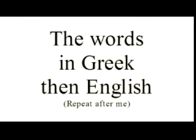On to the words. The words will be given in Greek, and you repeat after me, and then I'll tell you what they mean in English, and you repeat after me. Here we go. Aion. Aion means 'age,' as in a period of time.